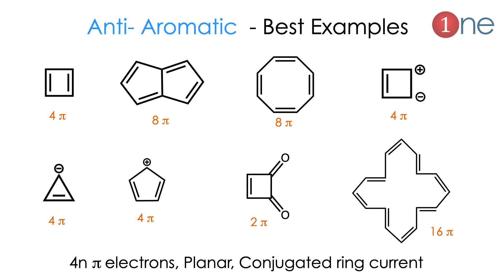The next one is anti-aromatic, which is similar to aromatic except it has 4n pi electrons. The same planarity and conjugated ring current apply. It can have 4 or 8 pi electrons most of the time, sometimes 2. It can involve conjugation, partial charge, or anions. So you should know: anti-aromatic means 4n pi electrons.